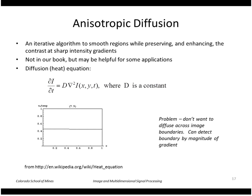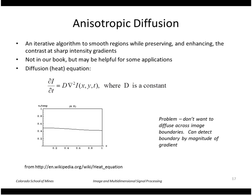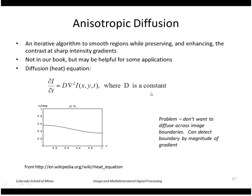Let's look at another algorithm to reduce noise in images called anisotropic diffusion. This tries to reduce noise within constant regions while avoiding blurring over boundaries, and it's based on the heat or diffusion equation from physics.